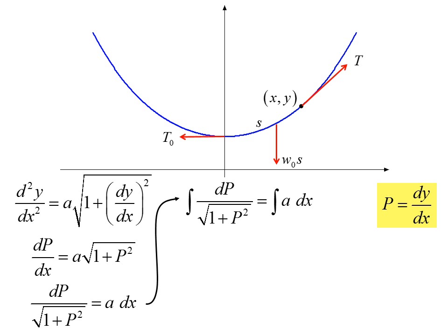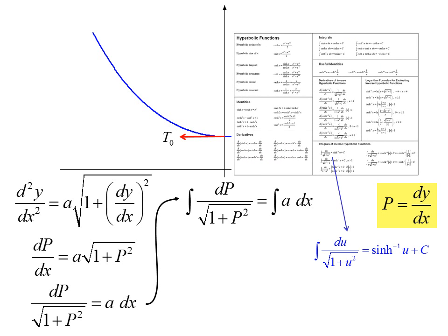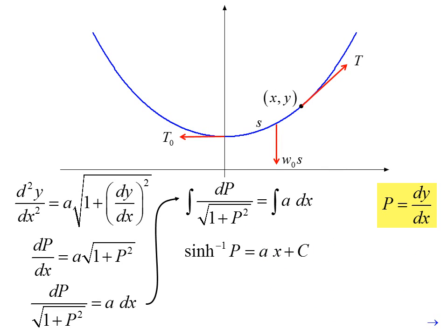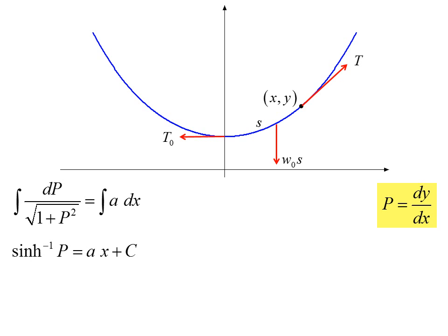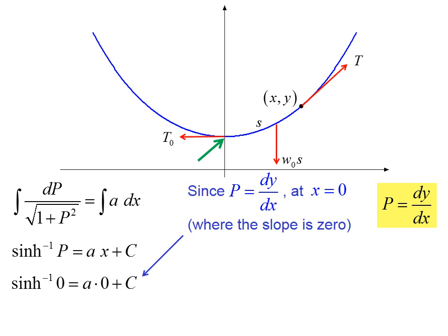And we integrate both sides. The integral on the left gives us inverse hyperbolic sine. And we have inverse sinh p equals ax plus c. Since p equals dy dx at x equals zero, where the slope is zero, we get inverse sinh zero equals a times zero plus c, or zero equals c, giving us inverse sinh p equals ax.